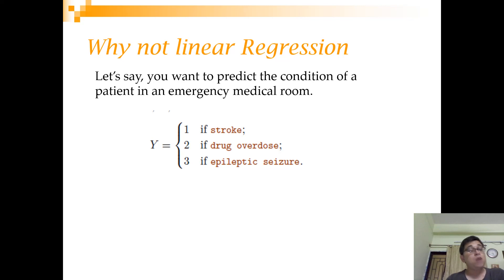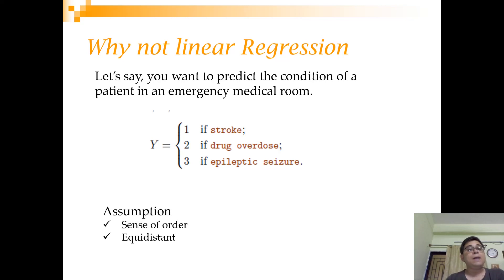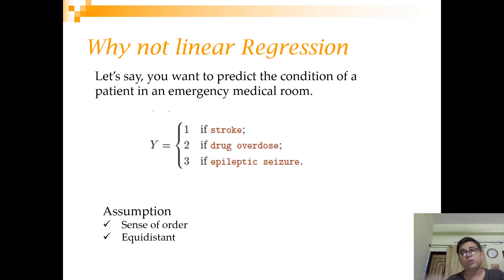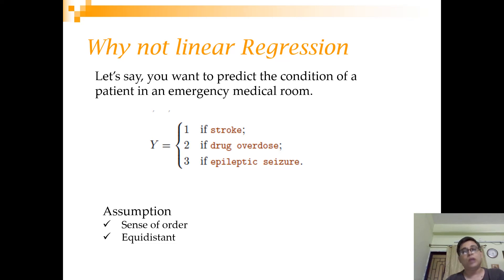There are at least two very important concerns. First, there is a sense of order — you are assuming that stroke comes first, then drug overdose, then epileptic seizure. Second, you are also assuming that the distance between stroke and drug overdose and the distance between drug overdose and epileptic seizure are equal. For these reasons, you cannot fit linear regression to problems with more than two classes.